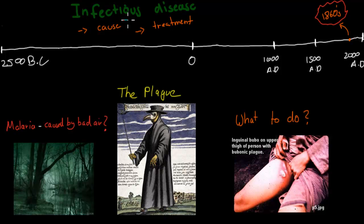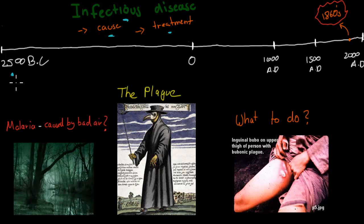In this video I'll be talking about infectious disease, more specifically about how our understanding of the cause and treatment of different infectious diseases has changed over time. For much of our history, from 2500 BC when our civilization started to about the 1800s, we had absolutely no idea what caused infectious disease.